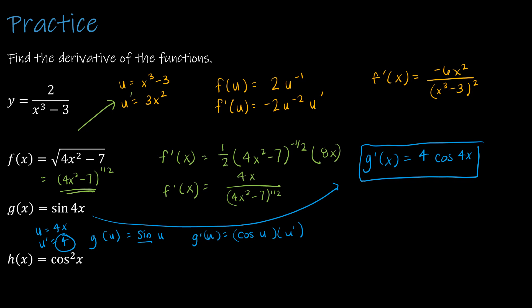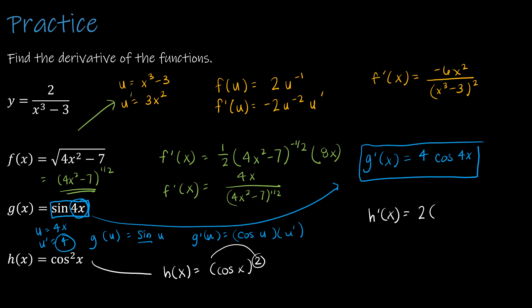For h(x) = cos²(x), remember this is (cos x)². Using the power rule: h'(x) = 2·(cos x)¹ · (derivative of cos x). The derivative of cos(x) is -sin(x), so h'(x) = -2cos(x)sin(x). There is a trig identity that could rewrite this, but we'll leave it as is to avoid confusion.